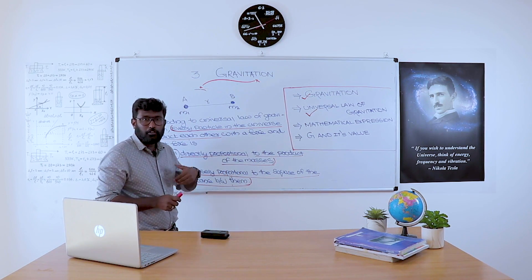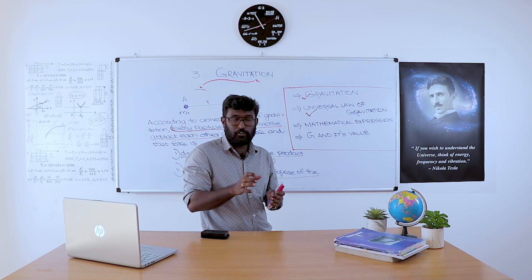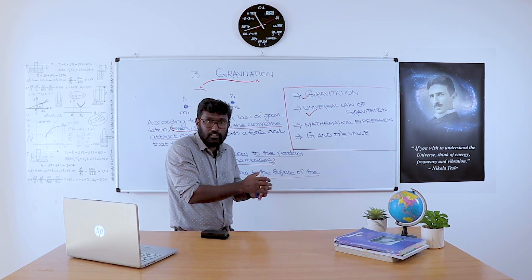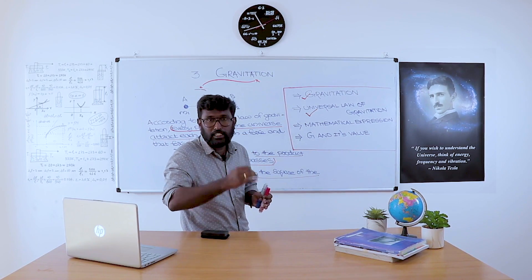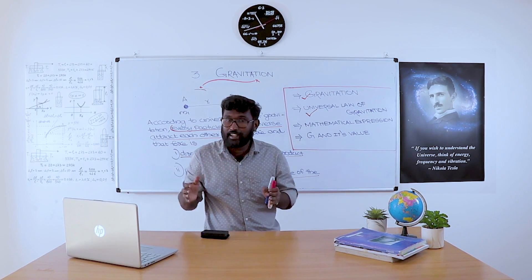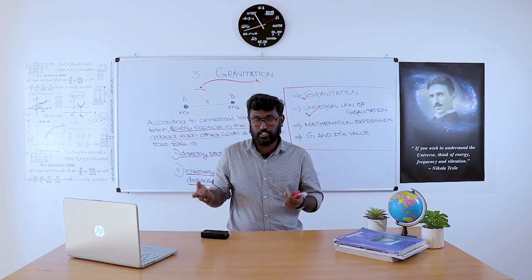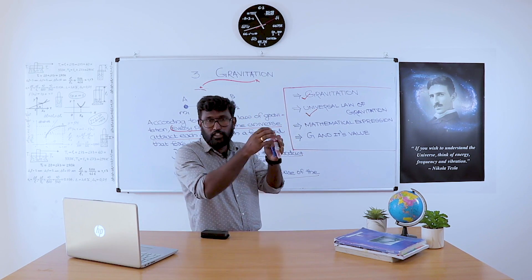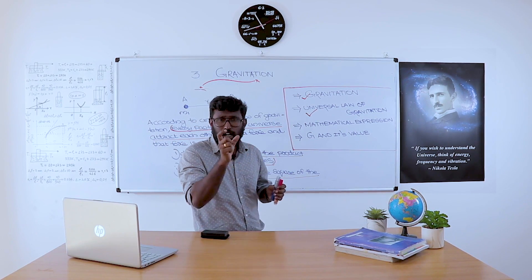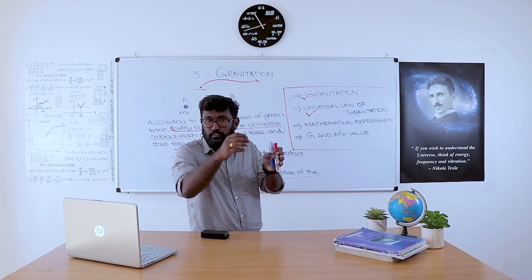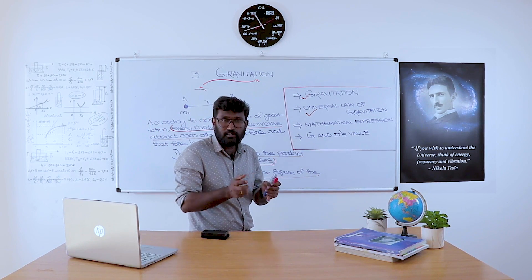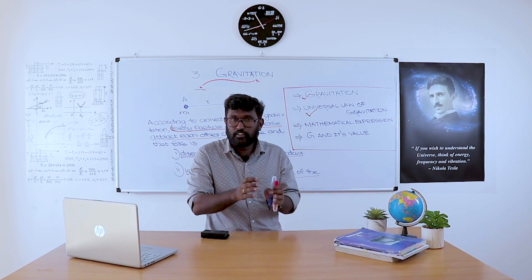So, here is the law. According to the Universal Law of Gravitation, there is a force of attraction — not interaction. Interaction means attraction and repulsion, but in the case of gravitation, there is no force of repulsion. There is always a force of attraction. So, the gravitational force is always an attractive force. That is the main peculiarity of the gravitational force. If two particles in the universe attract each other, that force of attraction is directly proportional to the product of the masses and inversely proportional to the square of the distance between them.